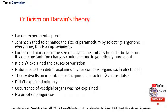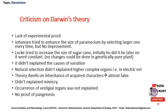Darwin's theory is worldwide acceptable, but it has certain criticisms. The first important criticism is that it does not have any experimental proof. The second is that Johannesson tried to enhance the size of paramecium by selecting larger ones every time, but there was no improvement. Similarly, Locke tried to increase the size of sugarcane — initially he did, but later it went constant. No changes could be done in a genetically pure plant, meaning natural selection is of no use.